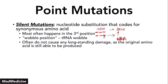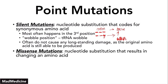This is a silent mutation, and it often does not cause any long-standing damage because the original amino acid is still going to be produced. Even though the DNA has changed and there is a mutation, the change does not lead to damage because the proper protein and amino acid are still being produced. The second type is a missense mutation. This occurs when a nucleotide substitution results in changing the amino acid itself. This essentially changes the entire protein, because proteins have a very specific amino acid sequence. However, you can still conserve the actual function if this is considered a conserved mutation.